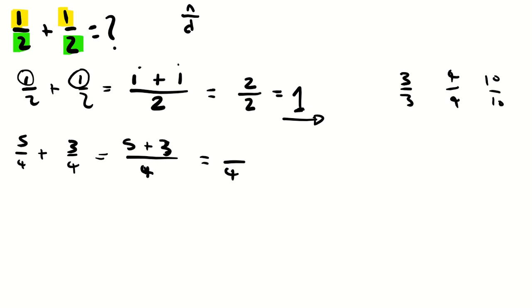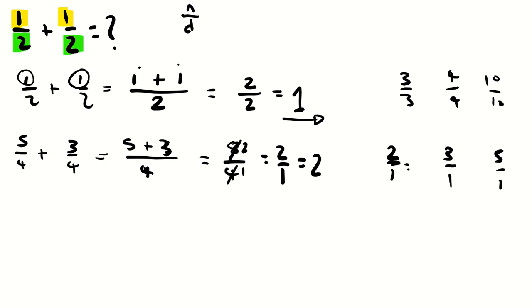You carry the 4 over, and then 5 plus 3 gives you 8. So you have 8 over 4. To simplify, ask how many 4s go into 8 — they go 2 times — so the answer is 2 over 1, which equals 2. Any number over 1, whether it's 2 over 1, 3 over 1, or 5 over 1, is equal to that number.